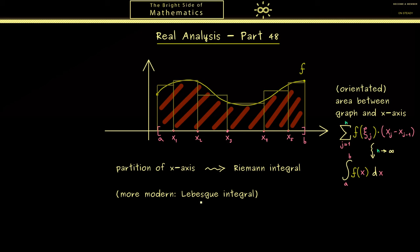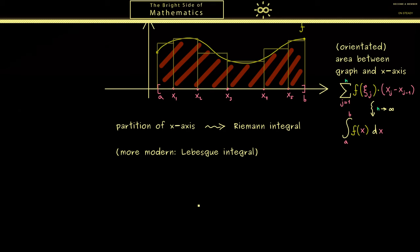Of course in the end both definitions will describe the same thing, namely the orientated area between the graph and the x-axis. However, it turns out that the Lebesgue integral works more generally, which means you can apply it to more functions. But since the Riemann integral is not hard to explain, it is good to start with it. If you are interested in the Lebesgue integral, I have a whole other series about it.